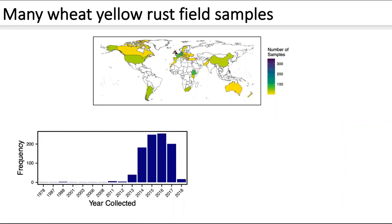Here we have some information about the field samples we've used to build our browser. At the top we have a map of the locations that the field samples were collected from. You can see we cover every wheat-growing continent, though the majority of our samples are from Europe and particularly the UK, thanks to our good integration with local surveillance programs. We can also see a plot of the date each field sample was collected. 2013 was the trial year for the field pathogenomics program, and since then we've seen a large rise in sampling peaking in 2016. We also have some historical samples, and in the end we've ended up with 964 field samples.